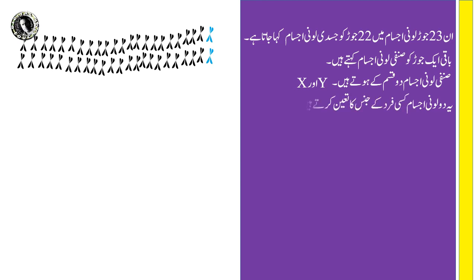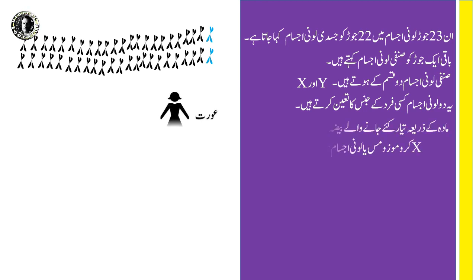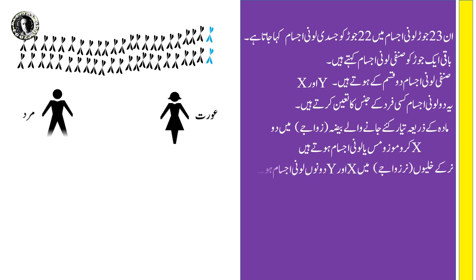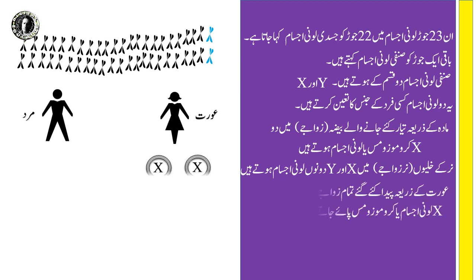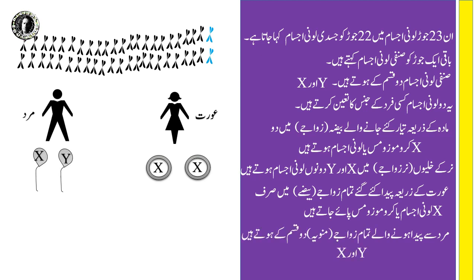یہ دونوں لونی اجسام کسی فرد کے جنس کا تائین کرتے ہیں۔ مادہ کے ذریعے تیار کیے جانے والے بیزے یا زواجے میں دو X کروموزومز ہوتے ہیں۔ عورت کے ذریعے پیدا کیے گئے تمام زواجے میں صرف X لونی اجسام پائے جاتے ہیں، جبکہ مرد سے پیدا ہونے والے تمام زواجے یا منویے دو خسم کے ہوتے ہیں: X اور Y۔